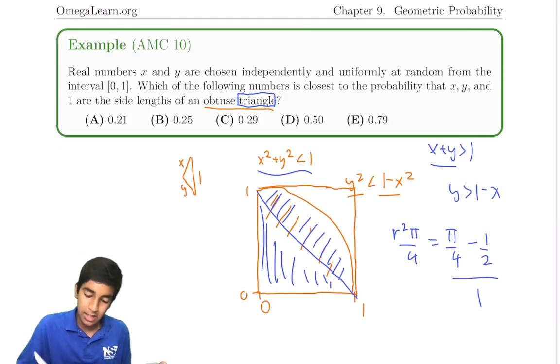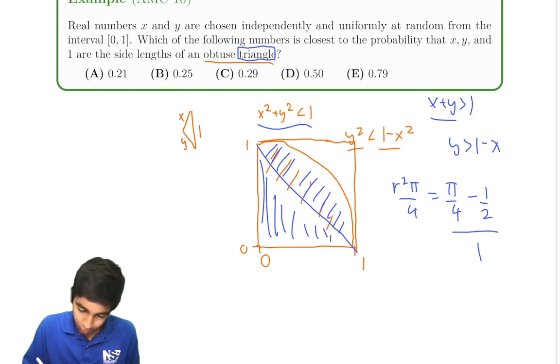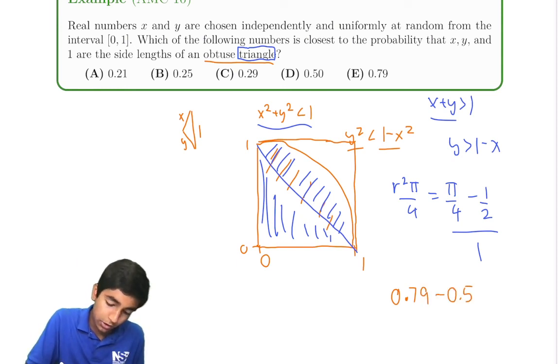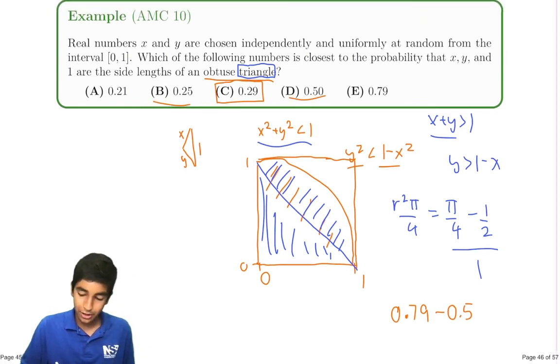And now we can just estimate this. We know pi is about 3.14-ish. So it's about 0.79 minus 0.5, which is about 0.29. And none of the option choices are even close, so we know we're good. And that is the answer for this one.